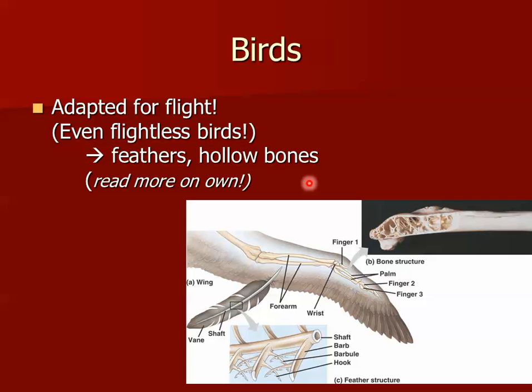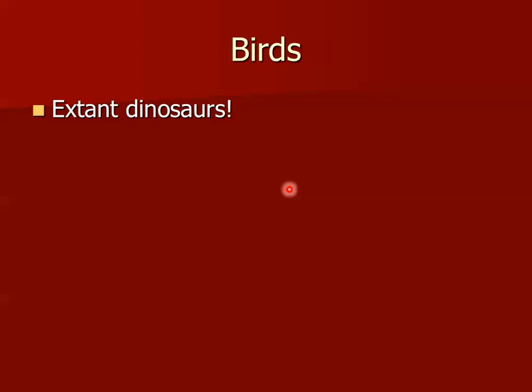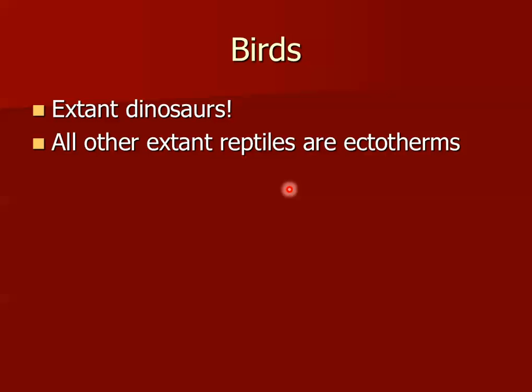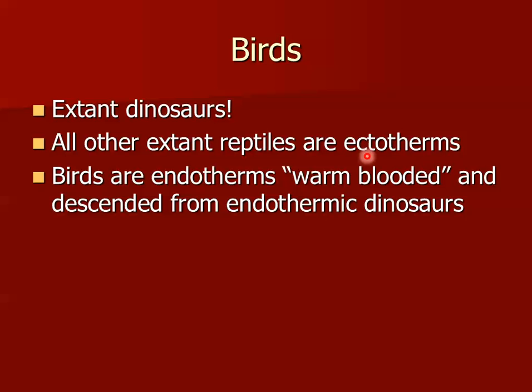Be sure to read your study guides carefully and be able to list or discuss several adaptations birds have for flight. Most scientists today consider birds extant dinosaurs. Now, an interesting characteristic: all other extant reptiles are ectotherms, but birds are endotherms — warm-blooded — and they maintain their own body temperature. The evidence points to some endothermic dinosaurs, and today's bird lineages are believed to have descended from these endothermic dinosaurs.